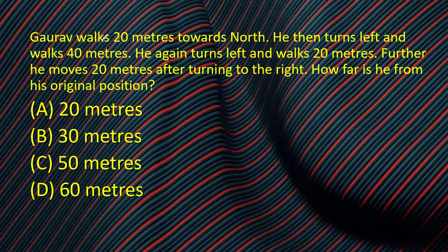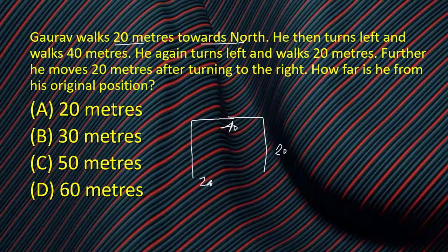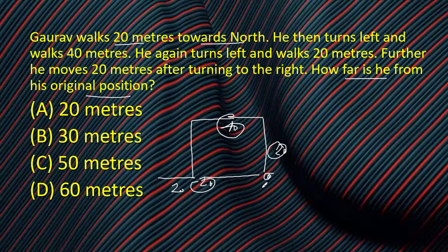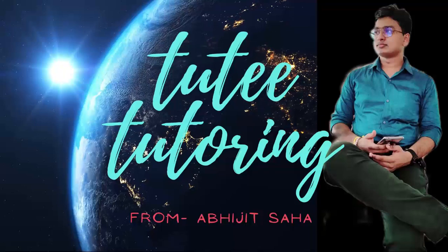Question 10: Guru walks 20 meters North, turns left and walks 40 meters, turns left again and walks 20 meters, then turns right and walks 20 meters. The two 20-meter north/south segments cancel. The remaining distances are 40 meters plus 20 meters = 60 meters. Answer: D — 60 meters. That's the end of the video — thanks for watching.